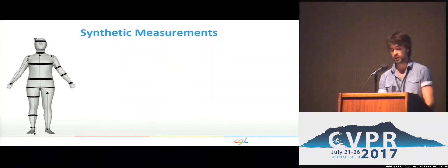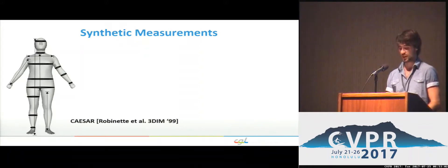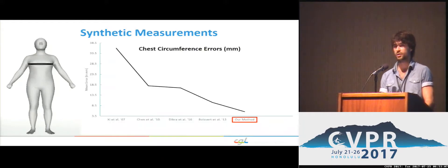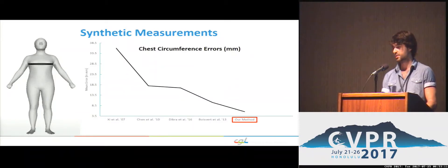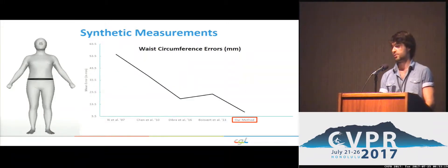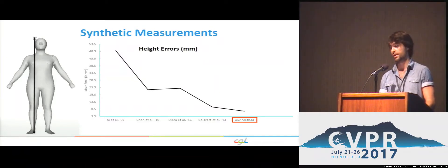For quantitative evaluation, we compute 16 body measurements widely used in tailor-fitting over a set of meshes fitted to Caesar human body scans, similar to Boisvert et al. We report mean errors for each measurement over all test meshes. For example, here the chest circumference measurement errors are shown in millimeters for various methods we compare to along with ours. Similarly, for the waist circumference and height. As can be seen, our methods tend to achieve the lowest reconstruction error.